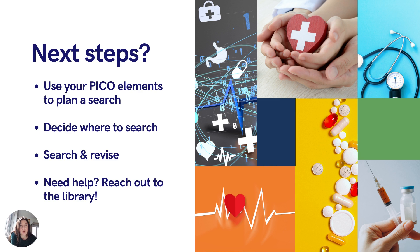For your next steps, use your PICO elements to plan a search. Take each one of those elements and treat them as a keyword. Map out your related terms and synonyms, and then consider how accurately those represent what you're hoping to find. Then decide where to search. For this topic, I'd recommend starting in Medline and CINAHL, but we have a great list of resources on our nursing and health studies database list, so make sure you check those out.